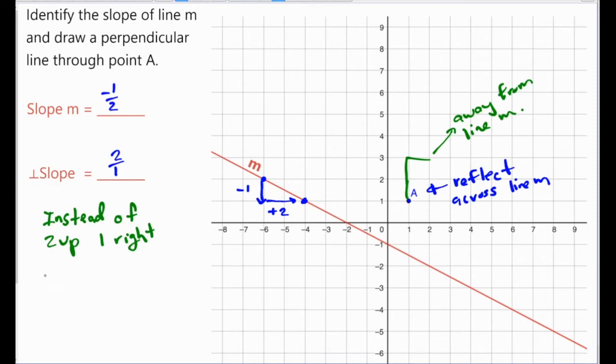Instead of 2 up and 1 to the right, we can change both of these, make both of them opposites, and go 2 down and 1 to the left. Let's go back to our point A and instead we're going to go 2 down and 1 to the left, and we see we land right on our line here. This is the perpendicular path that we're finding.